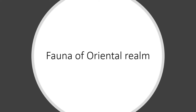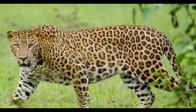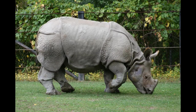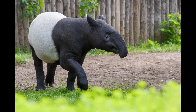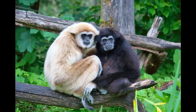Among the animals, several large mammals are present in the Oriental Realm. These include leopard, tiger, water buffalo, Asian elephant, Indian rhinoceros, Javan rhinoceros, Malayan tapir, orangutan, and gibbons.